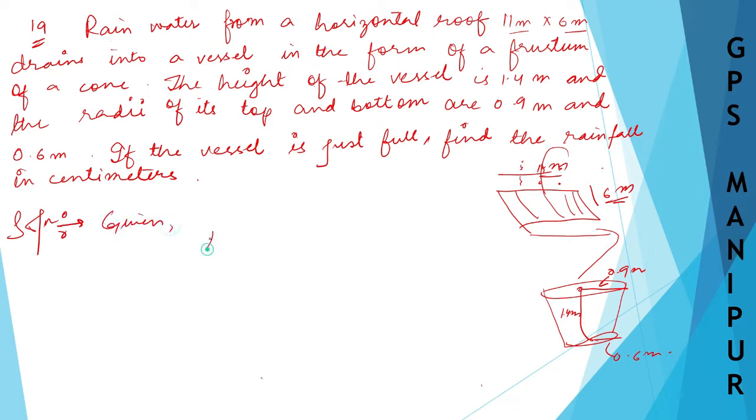Given L, let me say length of the roof, L is equal to 11 meters. You can see in the diagram 11 meters, so 11 meters is 11 × 100 centimeters, which is 1100.